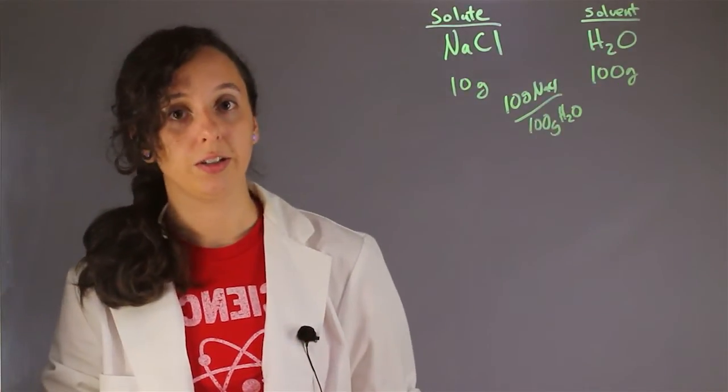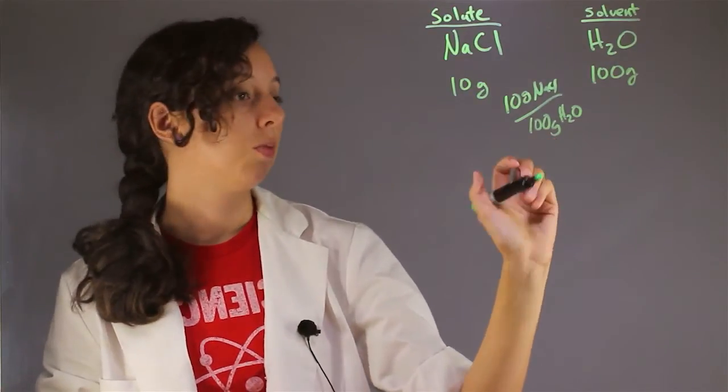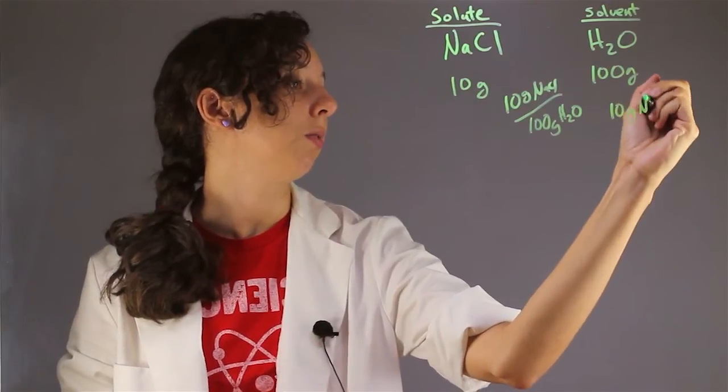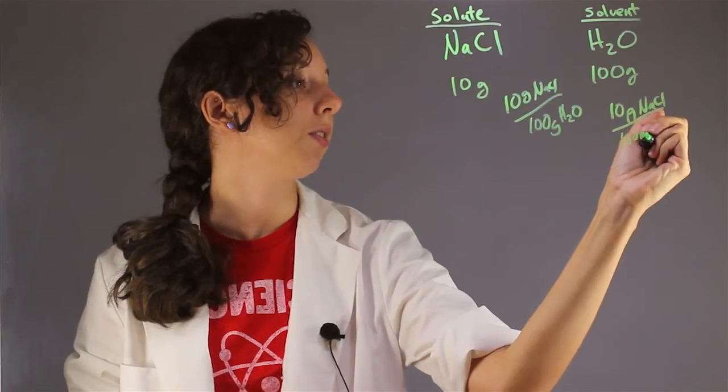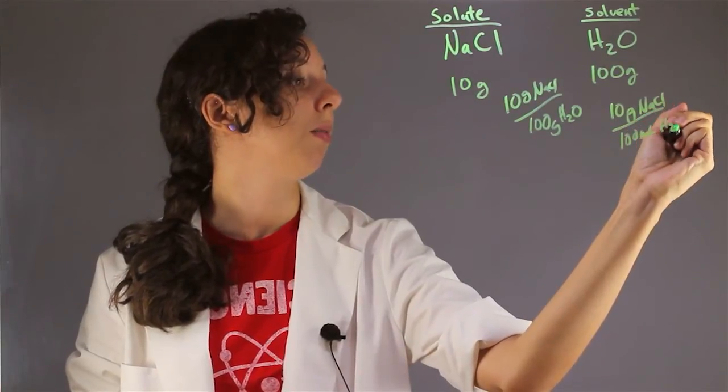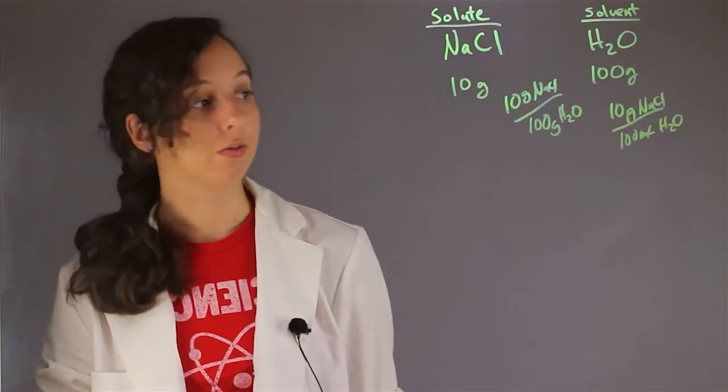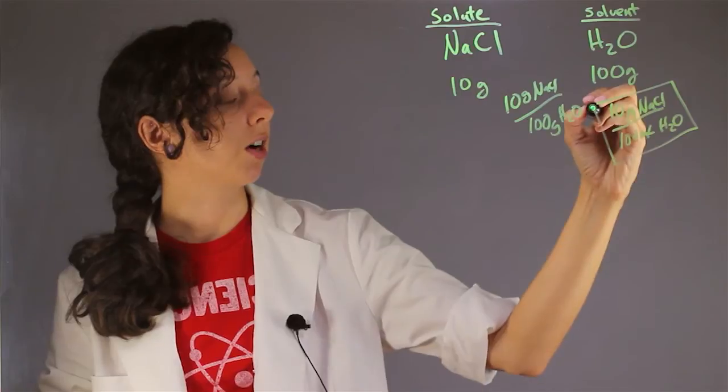But we usually don't use these units, we usually use something that denotes volume for the solvent. So a more typical way that we'd see it is 10 grams sodium chloride for every 100 milliliters of H2O. Remember that for water, grams and milliliters have a one-to-one conversion. And this would be something typical that we'd see for concentration.